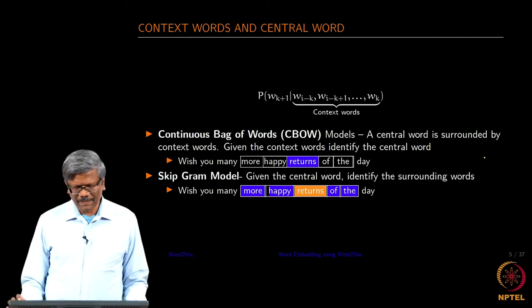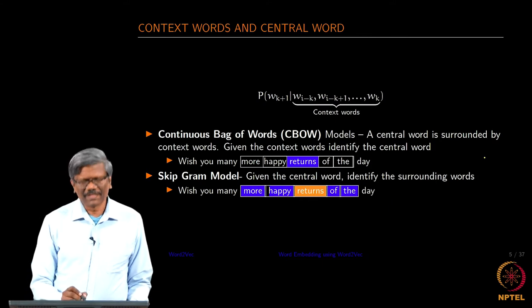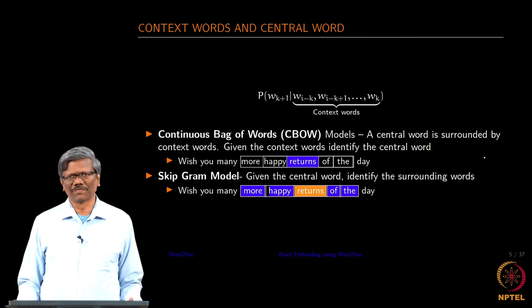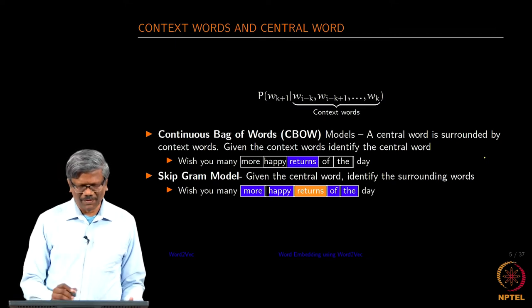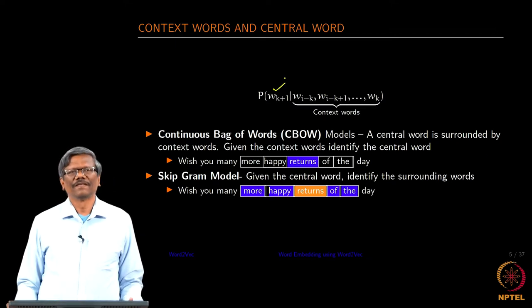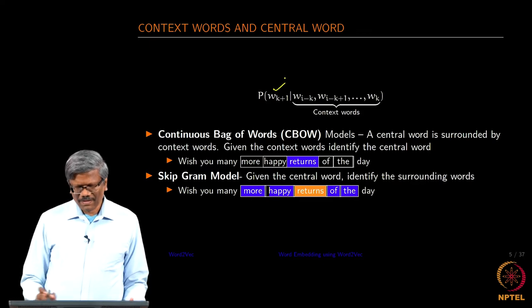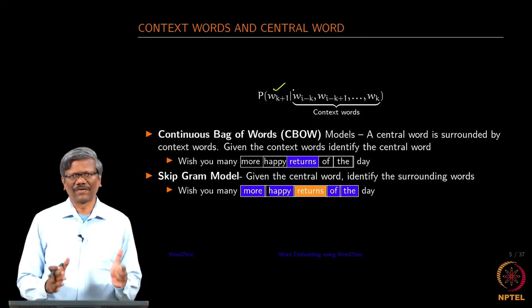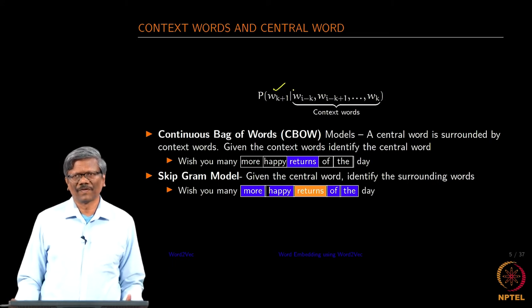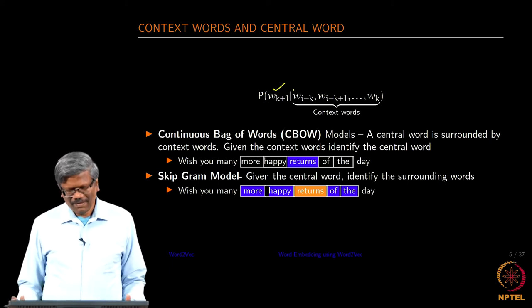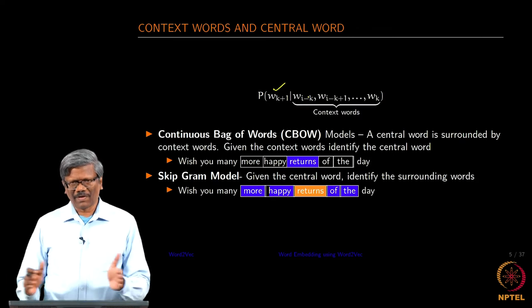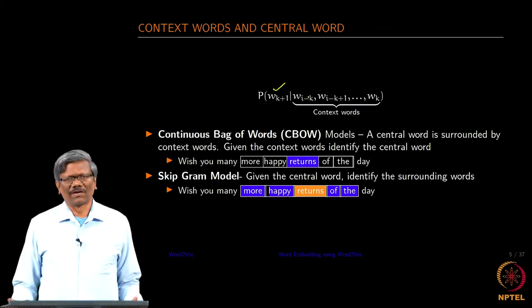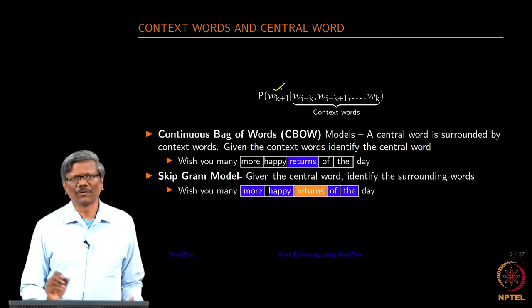If you look at the context words, you remember the conditional probability that we used in terms of identifying or predicting the next word in the language model. In the language model, the next word is the last word in the context of words. That means, when a context of words is given, the next one to the context is the word that you want to predict.